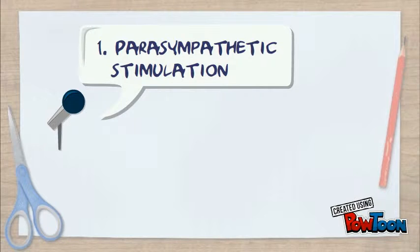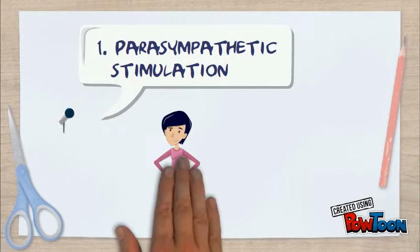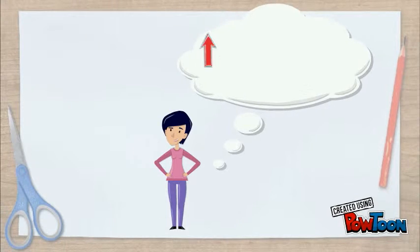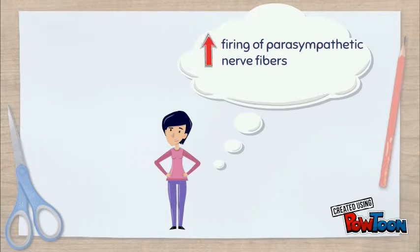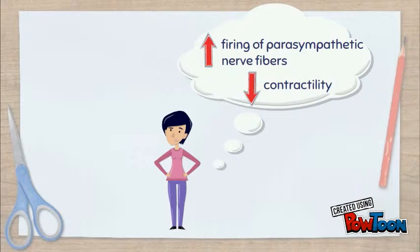The first factor is parasympathetic stimulation. When we increase the firing of parasympathetic nerve fibers, contractility will be decreased.